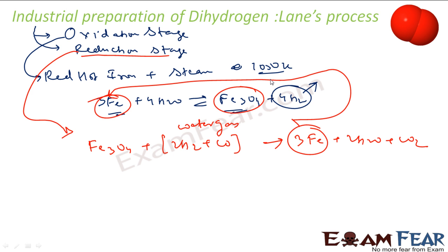Again we can do the oxidation stage, we can get four hydrogen. Again we will do the reduction stage, we will convert this back to my iron. And thus we can create more and more hydrogen. So the idea is to create more hydrogen gas and we should not use much resource. So we use iron, we oxidize this, again we reduce it back to iron.